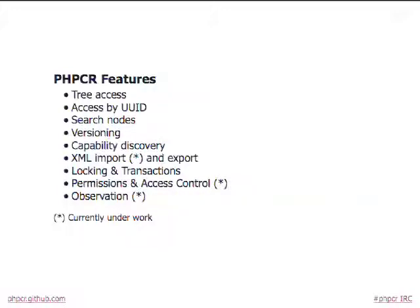Here's a high-level overview of PHPCR features. You get tree traversal — look up a path, get its parents and children. You can optionally get a UUID for any node and find or reference nodes by UUID. There's a full-text search API, versioning, and a capability discovery API that lets you figure out what's actually supported in a given implementation — for example, whether versioning is supported. There's XML import and export; PHPCR essentially specifies an XML database, so you can take any XML document and drop it into PHPCR without changing the data. There's also support for locking, transactions, permission control, and observation — which is sort of like triggers for a relational database.